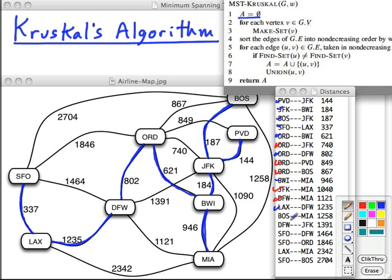Now, the algorithm as written would keep going. It would check Boston MIA and it would say they're already the same one, DFW, JFK are already in the same one, SFO, DFW, and so on. Can you think of a way to not do this extra work?